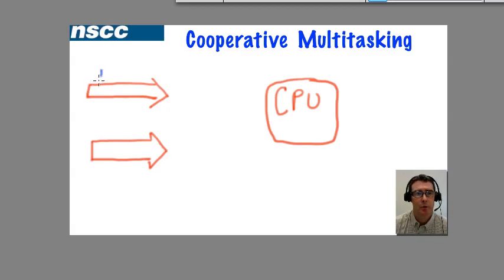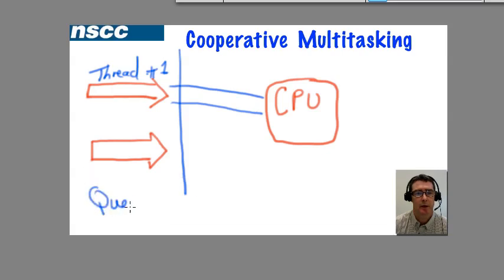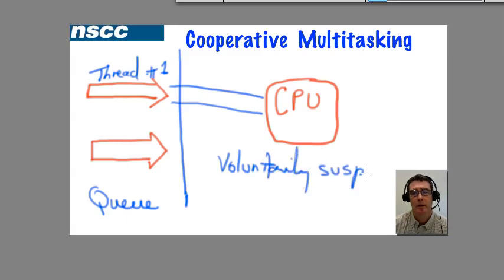Well, in cooperative multitasking, we would have a thread, thread number one, and it would be executed by the CPU. And it would be up to the thread, whoever programmed the sequence of instructions here, to make sure they check every so often to see if there are any other threads in a queue. You can think of this as being a queue or a pipeline. A thread would voluntarily suspend its own execution and would allow execution to flow to another application. So when that happens, this thread would suspend itself and we would have thread number two here, maybe from a different process, would have access to the CPU.